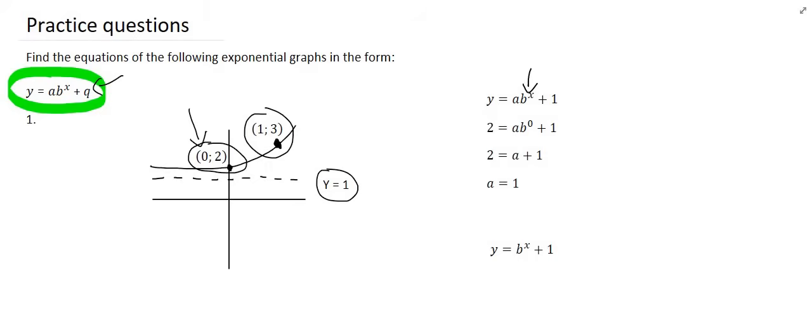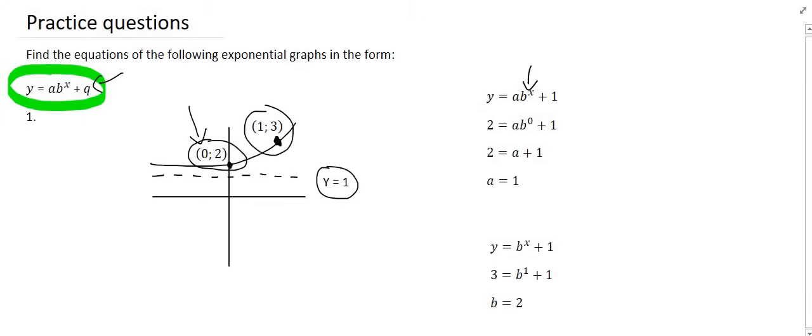And so all that we have left over is the following. And so there we can see we have Y equals B to the power of X plus 1. So we only have the B to find. So now we can substitute another point, which is the 1 and the 3. And then you can solve for B. And you'll get an answer of... There we go. So now we have everything. So now we can answer the question by filling all the letters that we have found. And so the final answer will be as follows: Y equals 2 to the power of X plus 1.